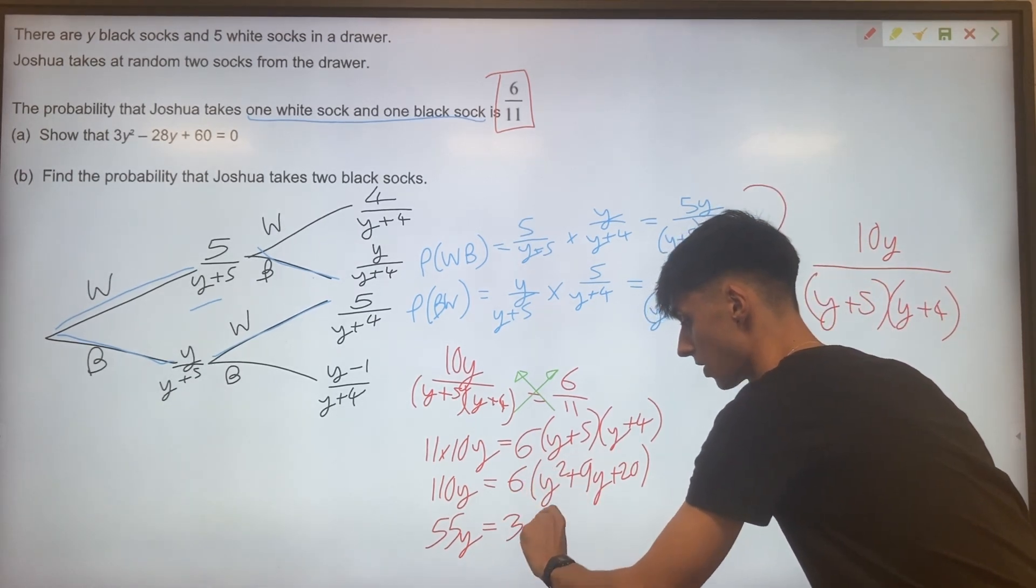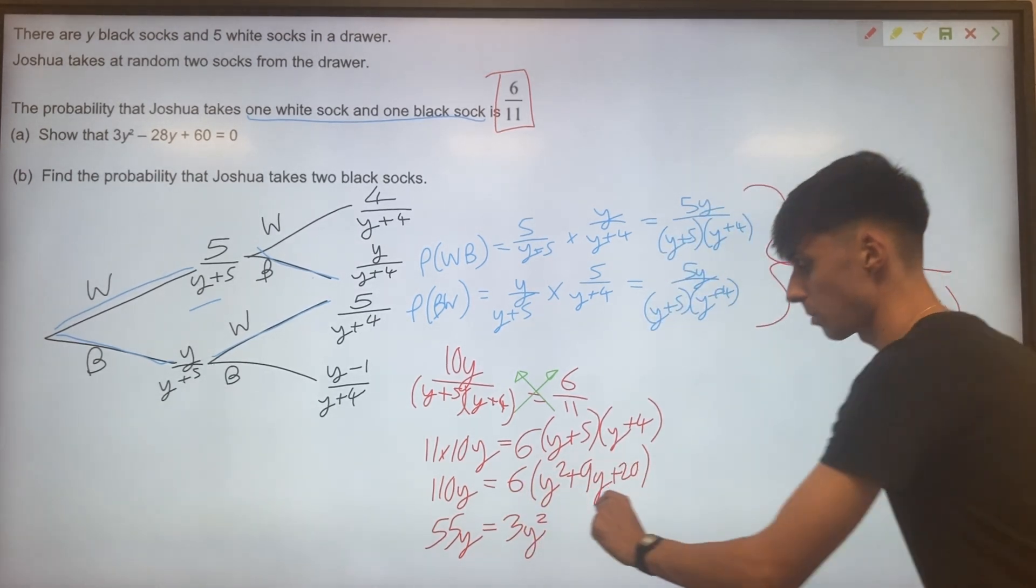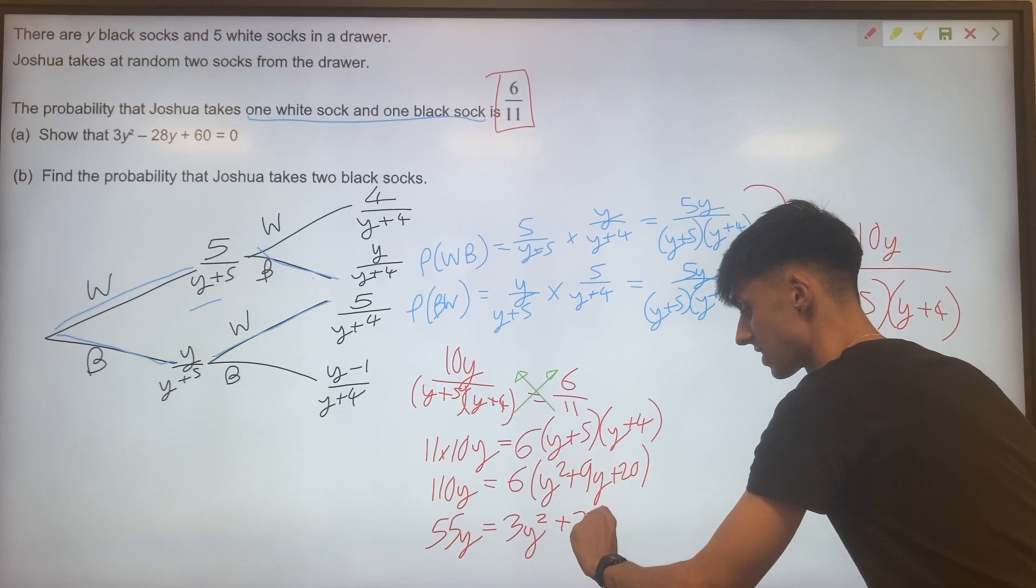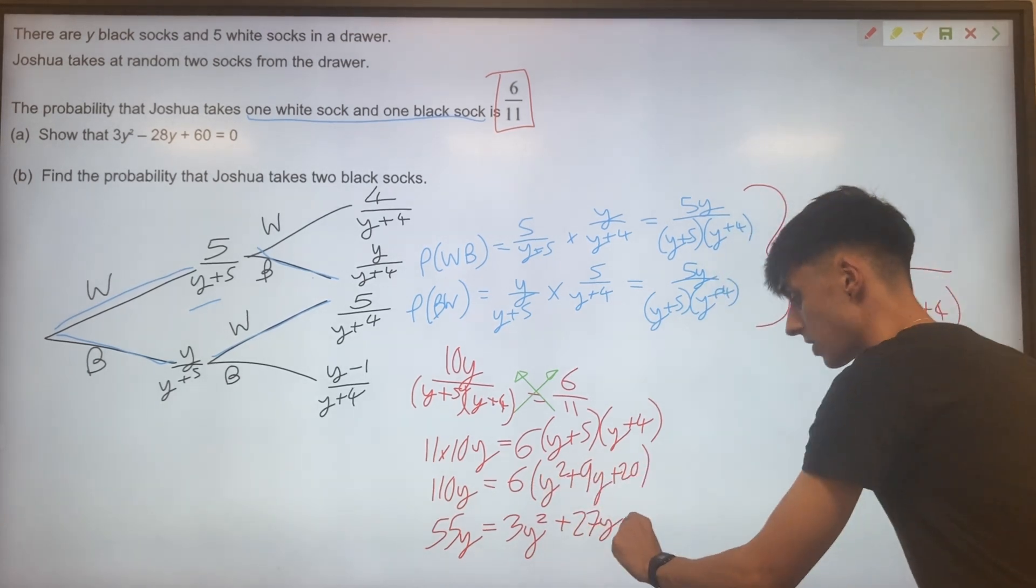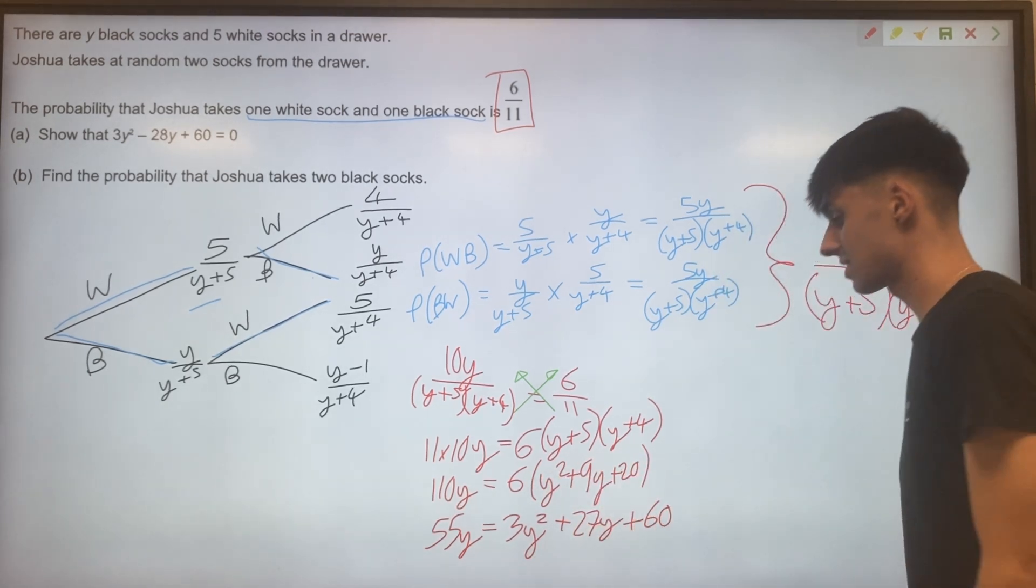So 3y squared, 3 times 9 will get you plus 27y. And then 3 times 20 will get you plus 60.